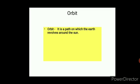Orbit — it is a path on which the earth revolves around the sun. Students, can you tell what is the shape of the orbit? The shape of the orbit is elliptical, not circular.